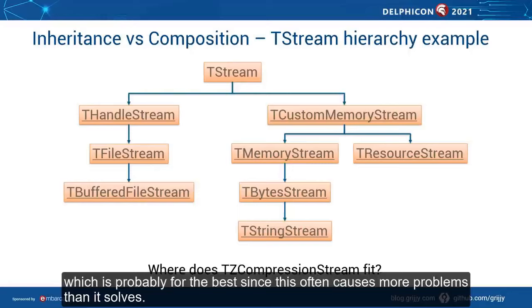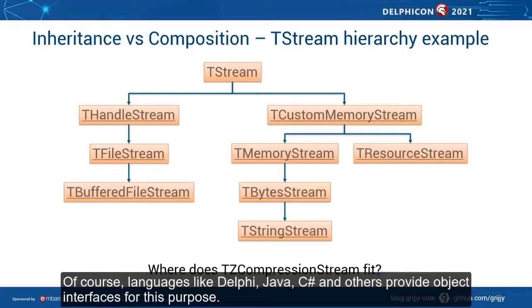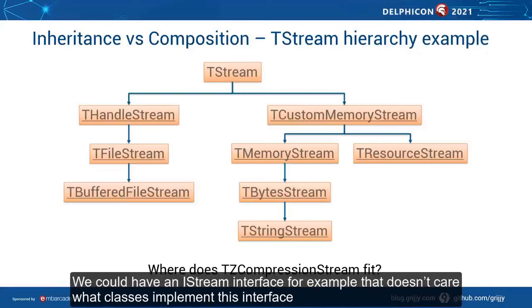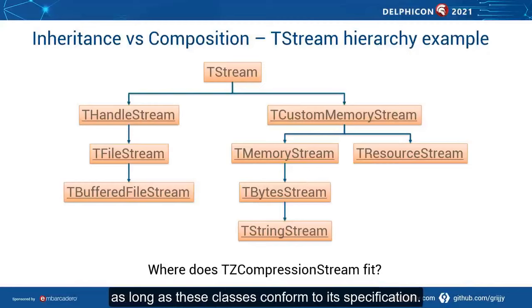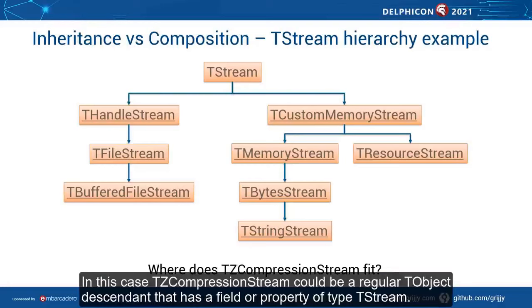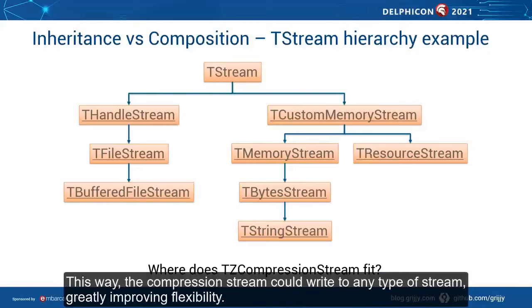Maybe you only use this class to write to a compressed file, in which case you should derive from TFileStream. But then you cannot use this class to compress data in memory — that would require you to derive from TMemoryStream instead. And unlike C++, you cannot derive from two classes, which is probably for the best, since it often causes more problems than it solves. Languages like Delphi, Java, C-sharp and others provide object interfaces for this purpose. We could have an IStream interface that doesn't care what classes implement it, as long as these classes conform to its specification.